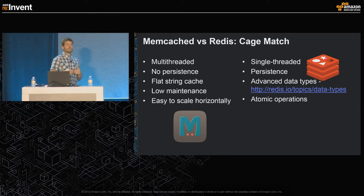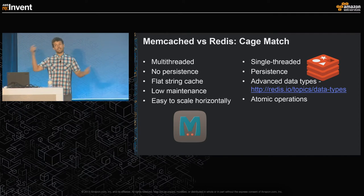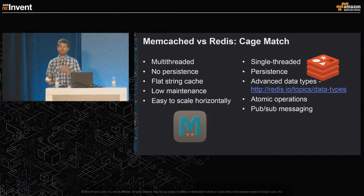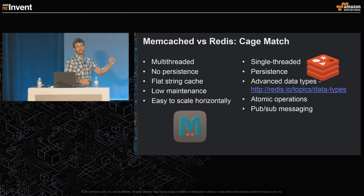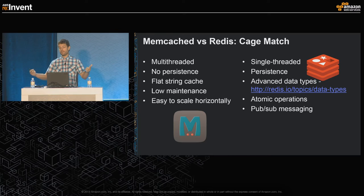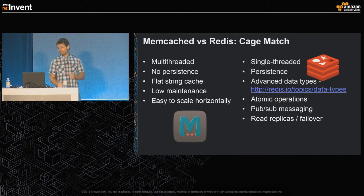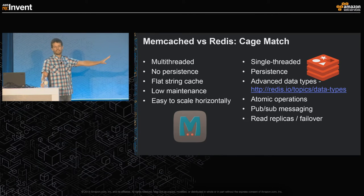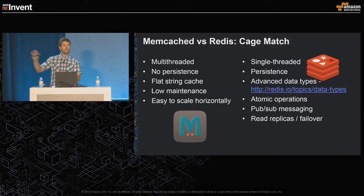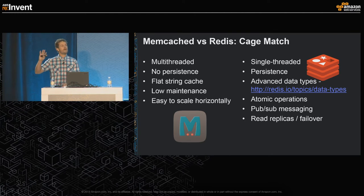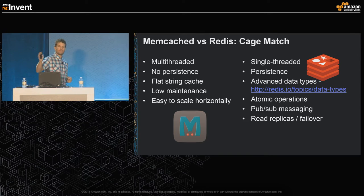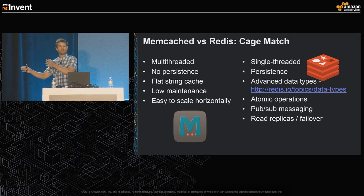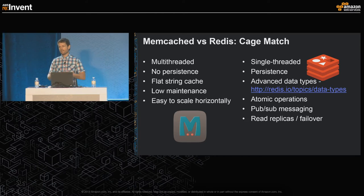Redis supports atomic operations — increments and decrements — so it's great for keeping distributed counters. If you have a large application tier and want to track work, you can keep a counter in Redis to coordinate. PubSub messaging is built in, so if you're doing a chat app, you just get that for free. Read replicas and failover are also built in. In a nutshell: for a flat cache, go with Memcache — bone simple, super easy to scale. But if you need Redis features, it's awesome, though there's more management and node sizing to think about.